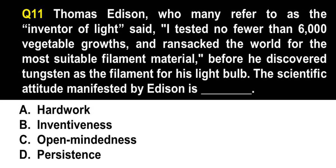For question number 11. Thomas Edison, who many referred to as the inventor of light, said: 'I tested no fewer than 6,000 vegetable growths and ransacked the world for the most suitable filament material,' before he discovered tungsten as the filament for his light bulb. The scientific attitude manifested by Edison — the correct answer is letter D. Hard work may also seem like an answer, but letter D is the more appropriate one. When encountering questions such as this, always choose the best answer.